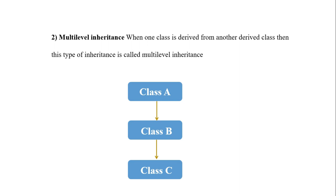Let's see a simple example program of multilevel inheritance. I am going to take the base class as 'grandfather', from this base class I will derive another class named 'father', and from that derived class father we again derive another class called 'son'. Let's move on to the example program.